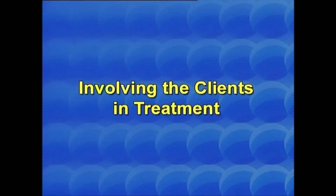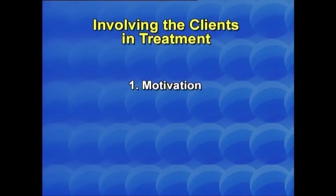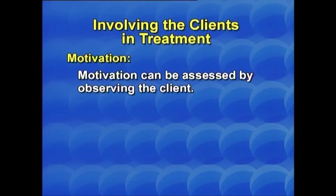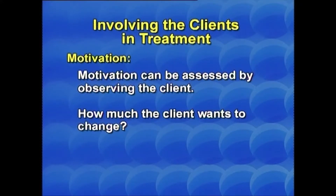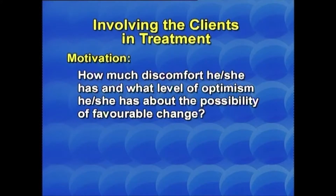Treatment involves dealing with declines in motivation. Treatment may be simple or complex and has two aspects: motivation and resistance. Motivation can be assessed by observing the client — how much the client wants to change, how much he or she is contributing to change, how much discomfort he or she has, and what level of optimism he or she has about the possibility of favorable change. When the client experiences too much discomfort and helplessness without any hope, the client experiences apathy and becomes weak in motivation. If discomfort is too little, there will be no reason for the client to change.